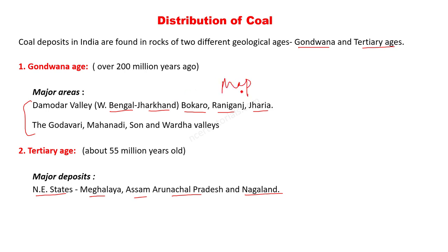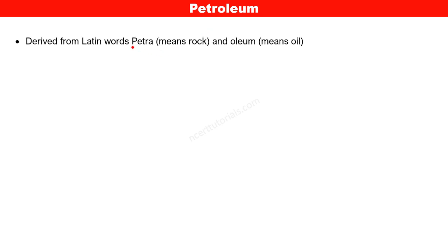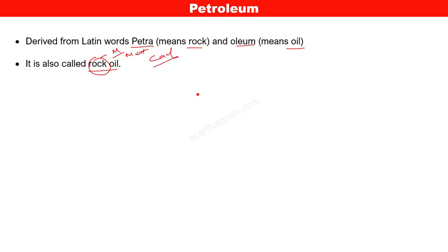We will study the map in the last video, locating places on a blank map. Moving on, the next energy resource used in our world is petroleum, also called crude oil. The word petroleum comes from 'Petra' meaning rock and 'Oleum' meaning oil — so petroleum literally means rock oil. In sedimentary rocks, we find minerals, metals, oil, and coal.